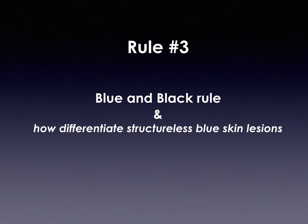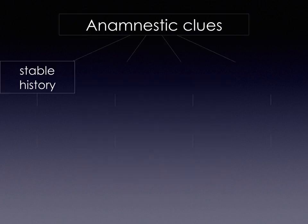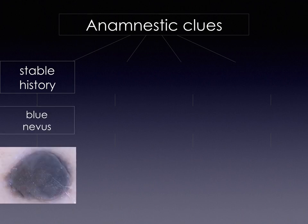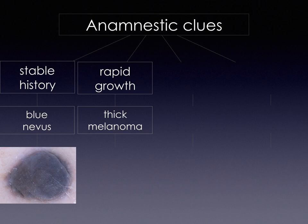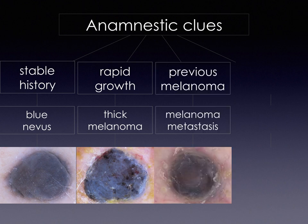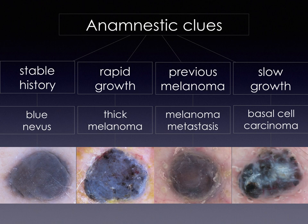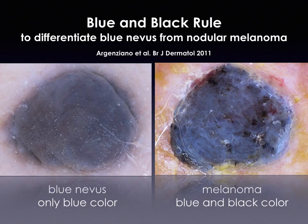Another important rule is the blue and black rule, which helps differentiate structureless blue skin lesions. The diagnosis of blue nevus should always be confirmed by a convincing history of no changes. A blue lesion with a stable history suggests blue nevus; rapid growth suggests nodular melanoma; a prior melanoma history points to metastasis; slow growth with arborizing vessels points to basal cell carcinoma. The blue and black rule differentiates blue nevus — which shows only blue color — from nodular melanoma, which shows both blue and black colors together.